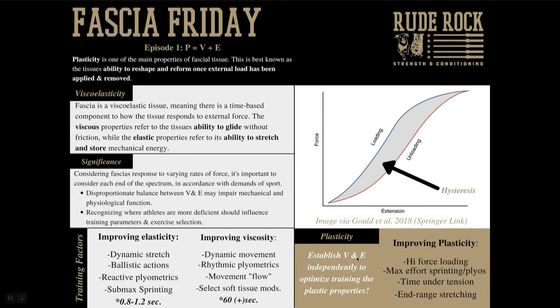Ultimately, I want to establish the viscous and elastic properties independently before focusing on the plastic properties. I know this may sound like jargon, but effectively, in order to get the most out of strength training and the other conventional methods most strength and conditioning coaches favor, I want to see if athletes are bound up or lacking mechanical stiffness. From there I can adjust training parameters to optimize the more conventional portions like strength training or sprinting. It always boils down to the demands of the sport, but we want to identify how the athlete is deficient within these three properties and determine where our time is best spent.